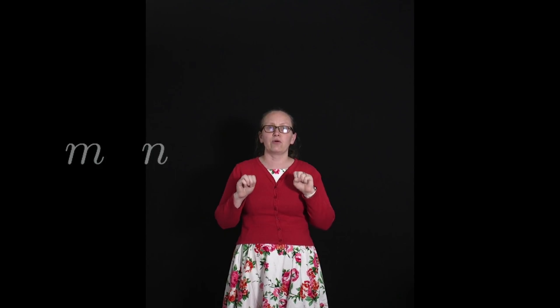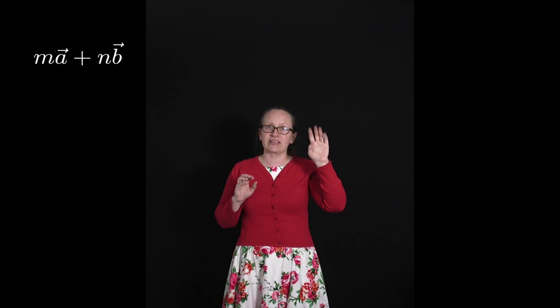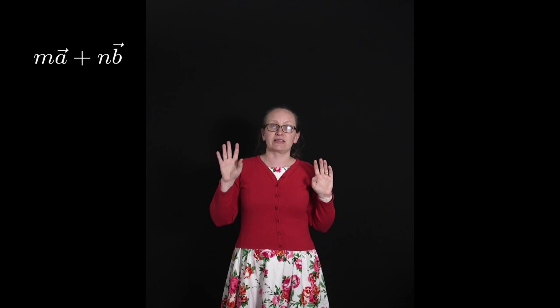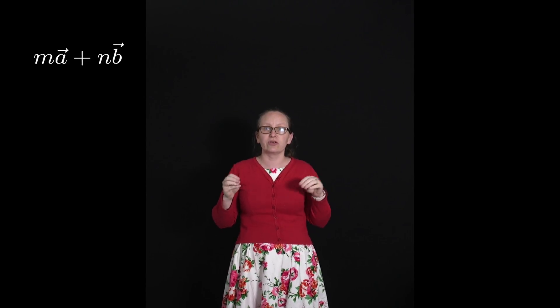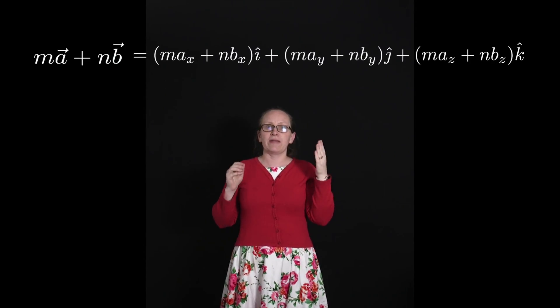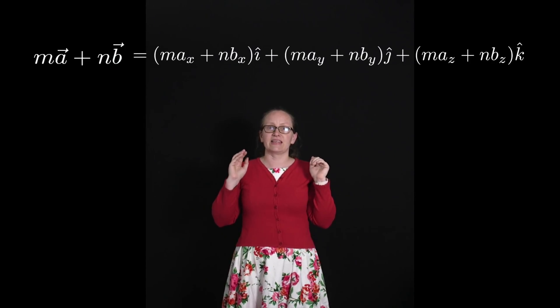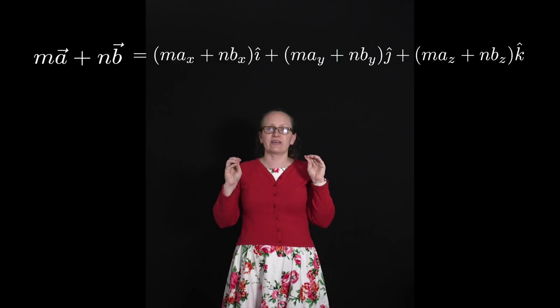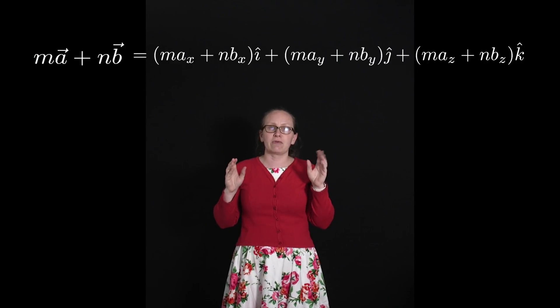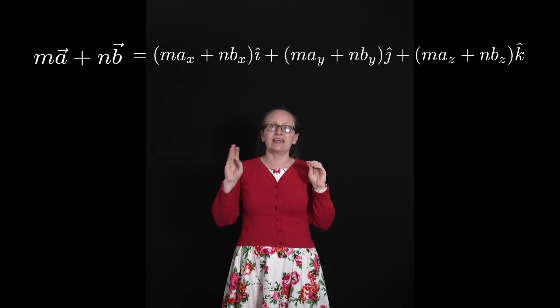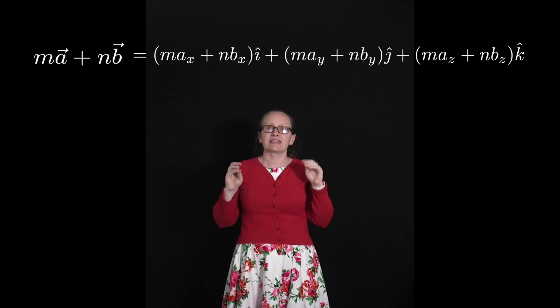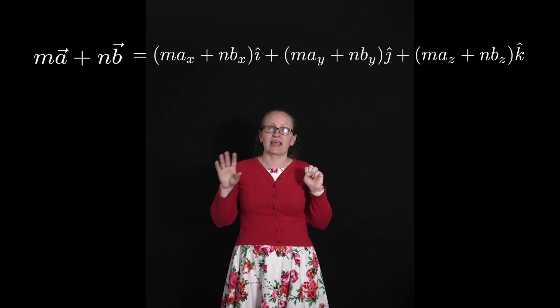Then if we wanted to work out what m times vector a plus n times vector b was going to be equal to, this would be equal to (m times ax plus n times bx) in the i direction, plus (m times ay plus n times by) in the j direction, plus (m times az plus n times bz) in the k direction.